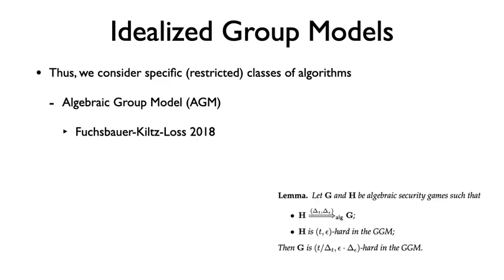Later, algebraic algorithms and the algebraic group model were introduced. In the 2018 paper, among many results, the authors claim that a generic reduction between two problems in the algebraic group model implies a generic reduction between these problems in the generic group model.